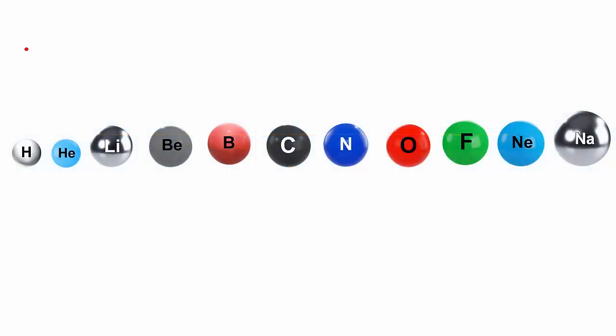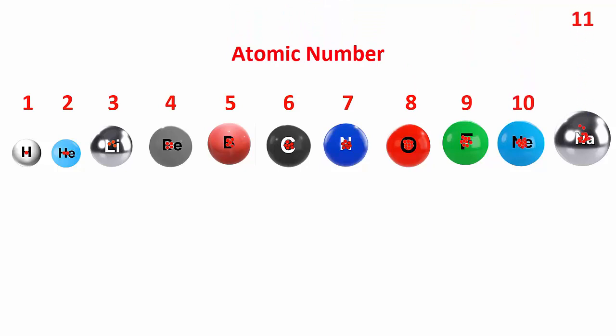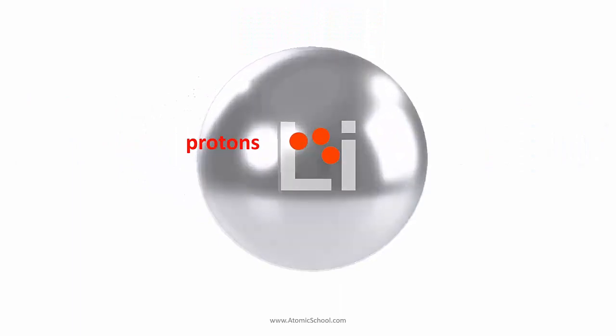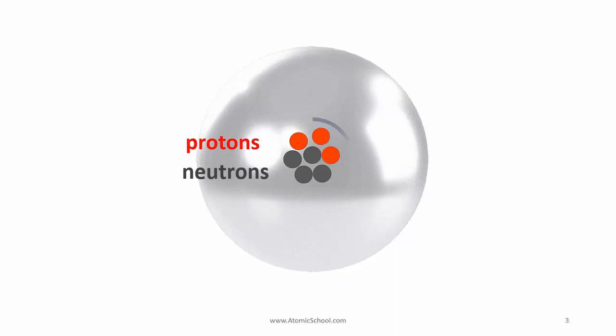In the last video we saw that atoms are made of three kinds of smaller particles: protons in the nucleus, which are numerically equal to the atomic number; neutrons also in the nucleus; and electrons around the outside in shells.